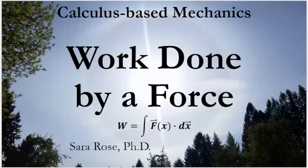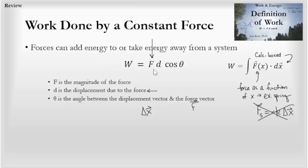If you're in algebra-based mechanics, we simplify this by only looking at constant forces, so it only becomes a dot product. Then we can use the definition of a dot product, which is the magnitude of the vector multiplied by the magnitude of the other vector and cosine of the angle between them.